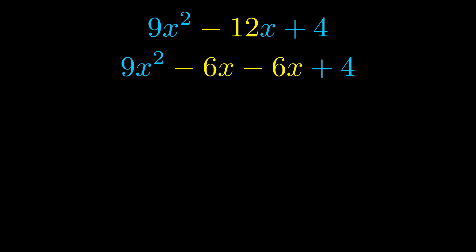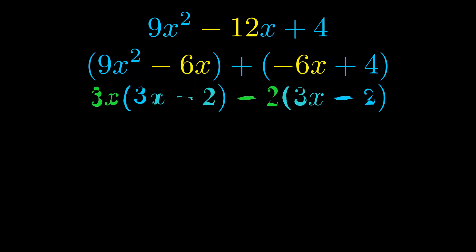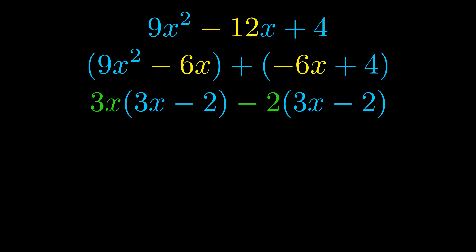Once we've done this we go ahead and put parentheses around the first term and the last term. And we do that so that we can take the greatest common factor out of both terms. We can see the greatest common factor is now outside in green. Notice also how what remains inside of the parentheses is the same in both cases.